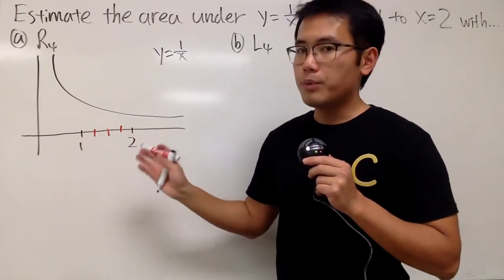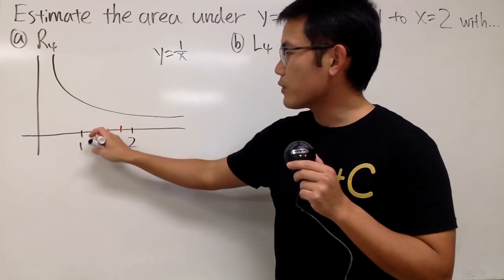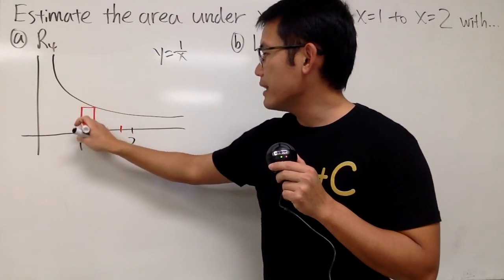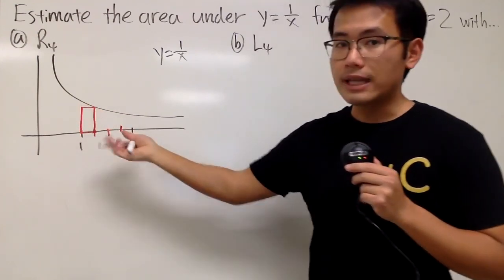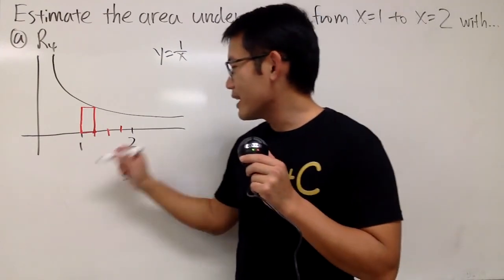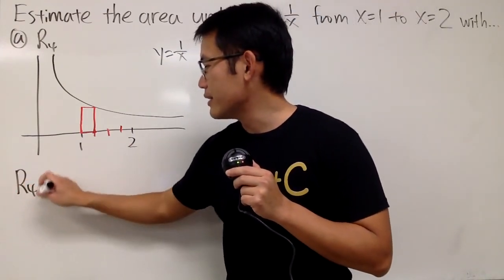All right, so this is the right endpoint. This is how we do it. You start from the right, and then you go up, hit the curve, and then make a rectangle. So that's the first right endpoint rectangle. And before I show you guys the rest, let me actually just start writing down the R4.